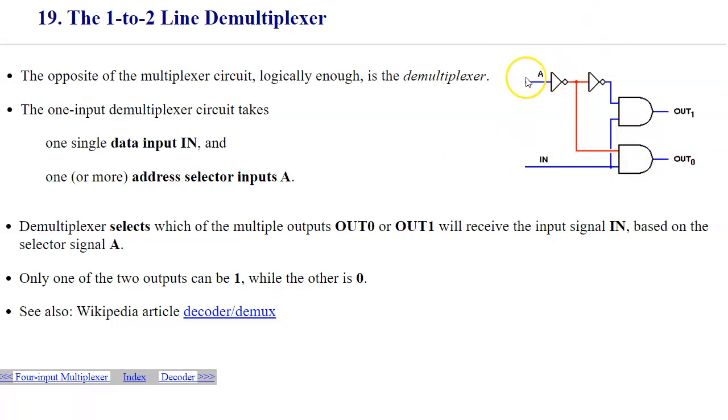And when the signal A is set to 1, this will make a selection of the input and direct it to output 1.